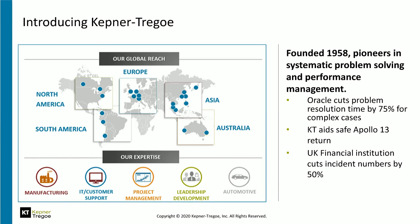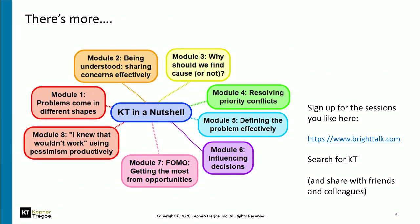Let's have a quick look at the series for those of you who have not been on one of these before. Here's the full list of modules. They're all recorded and available for you to listen to after the live session. You can find the information at brighttalk.com — search for KT at any time. This is module four: resolving priority conflicts. We've had modules one, two, and three up till now, and module five comes next Tuesday: defining the problem effectively.